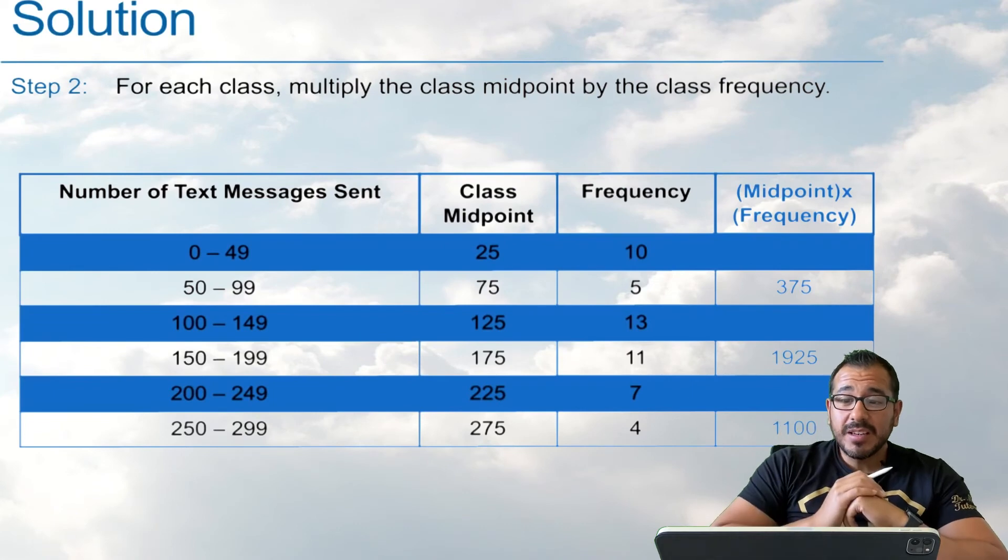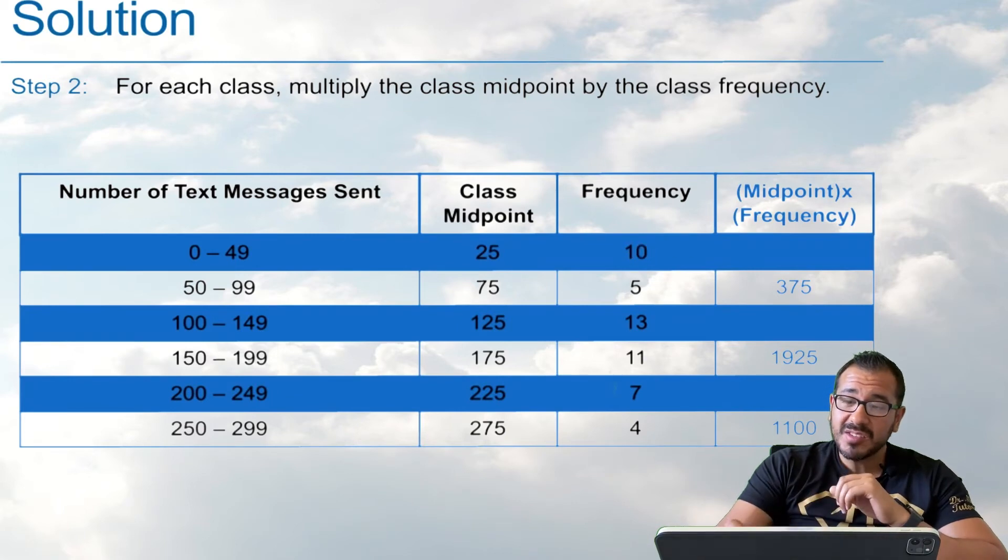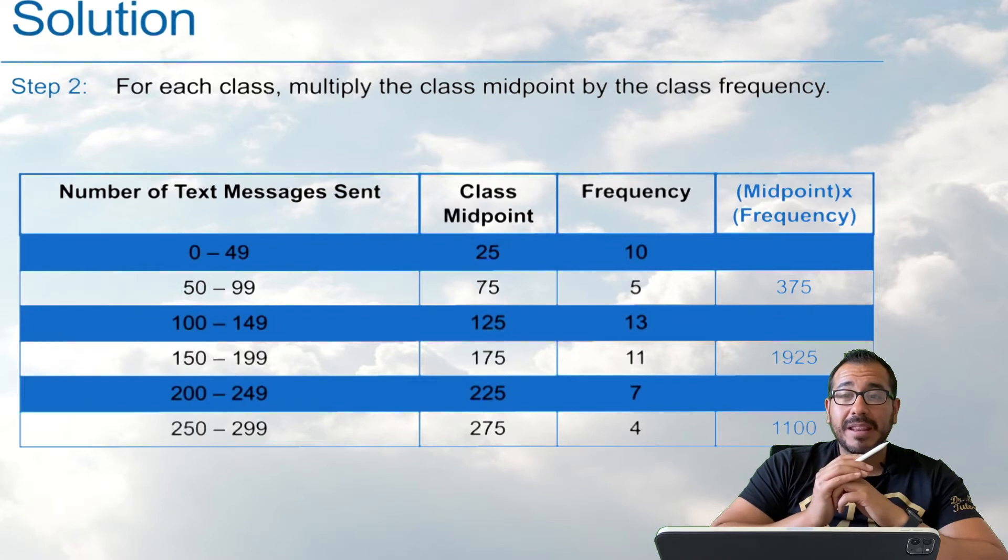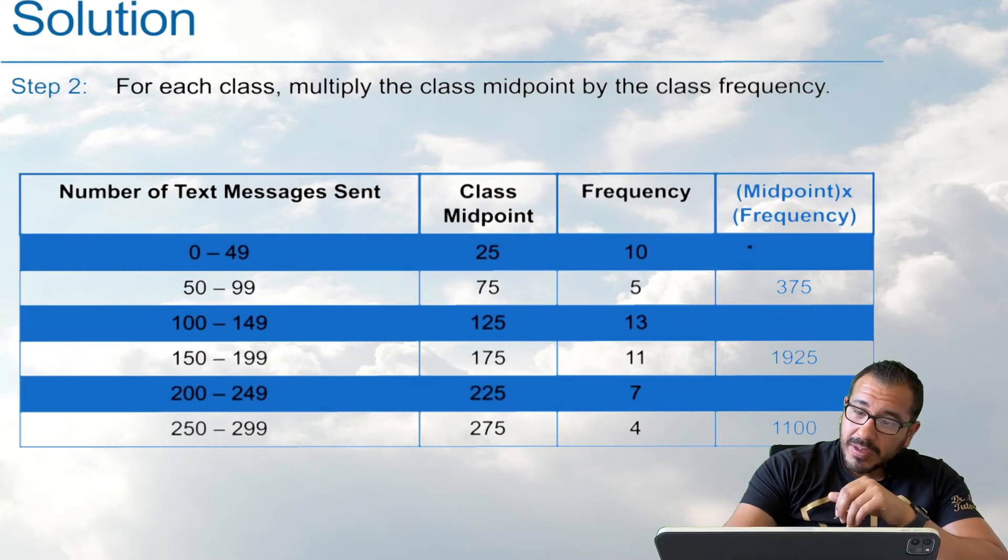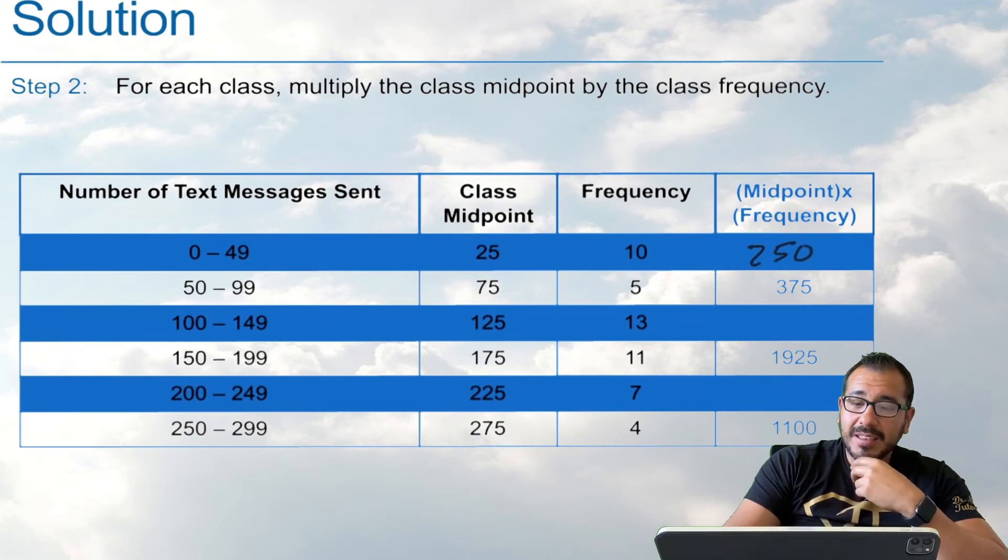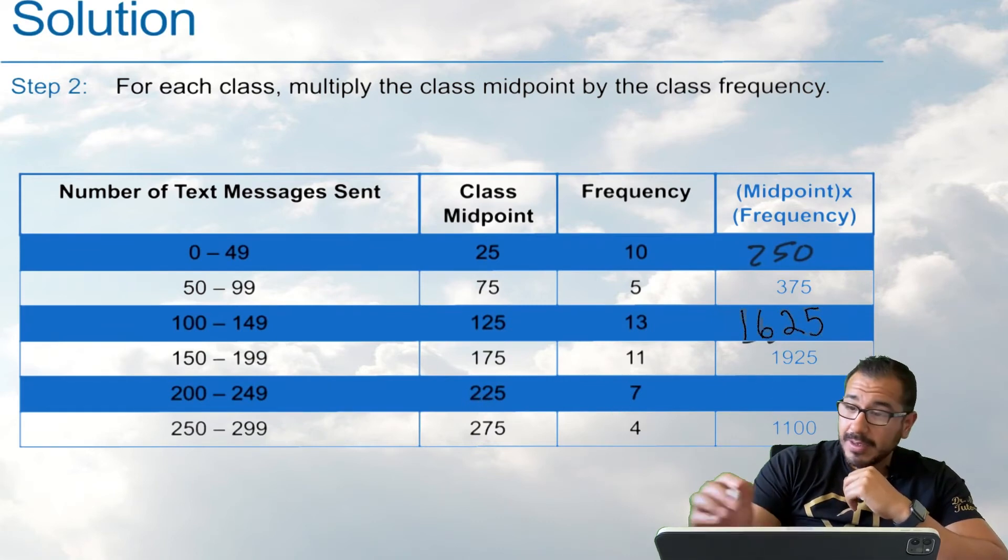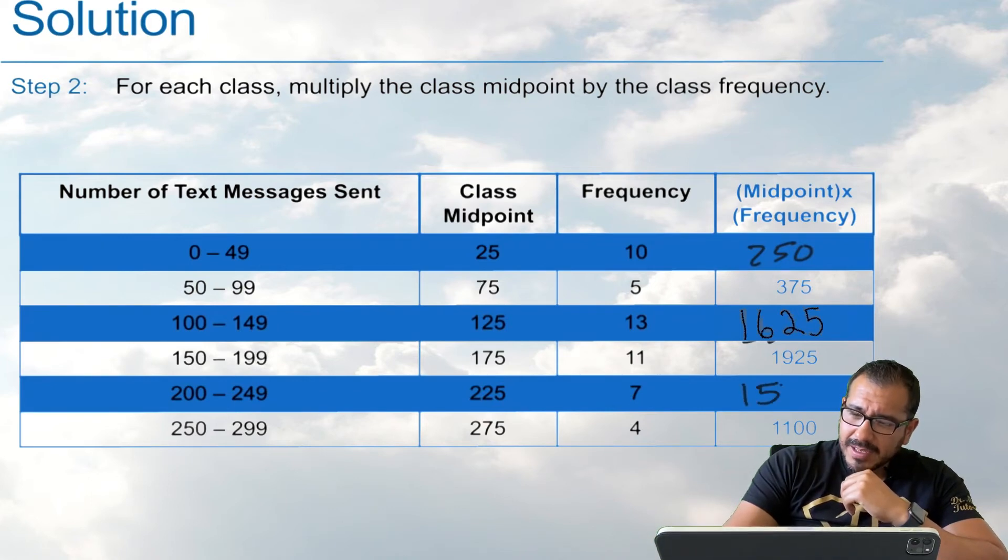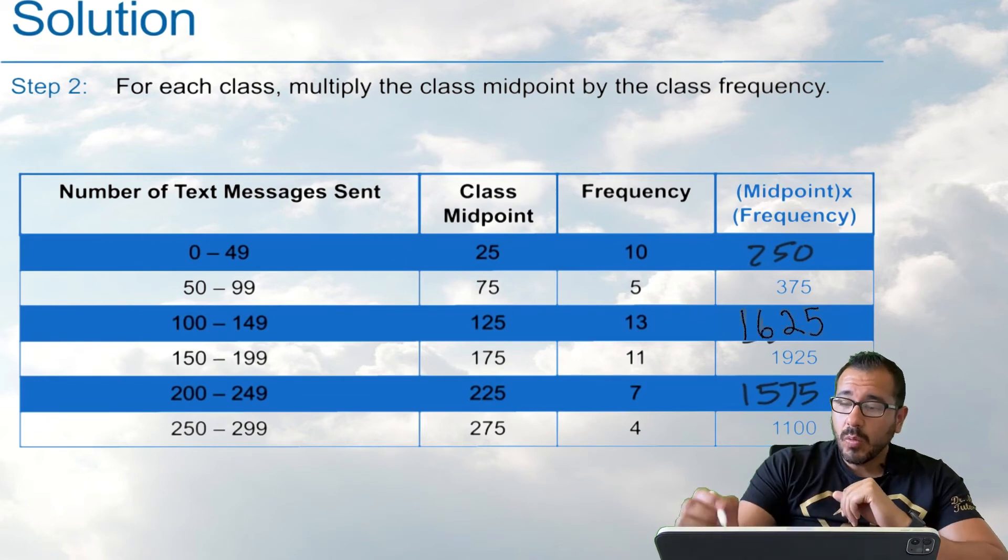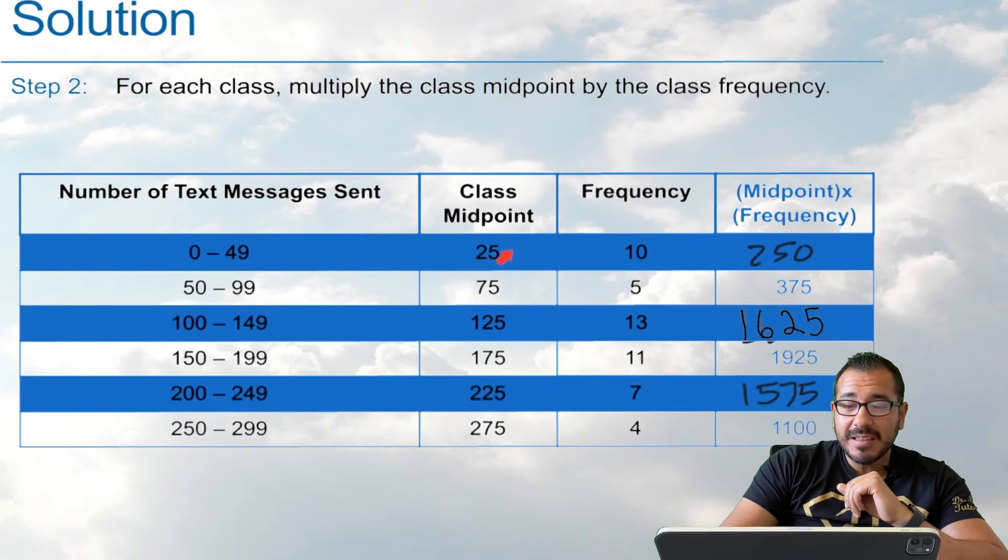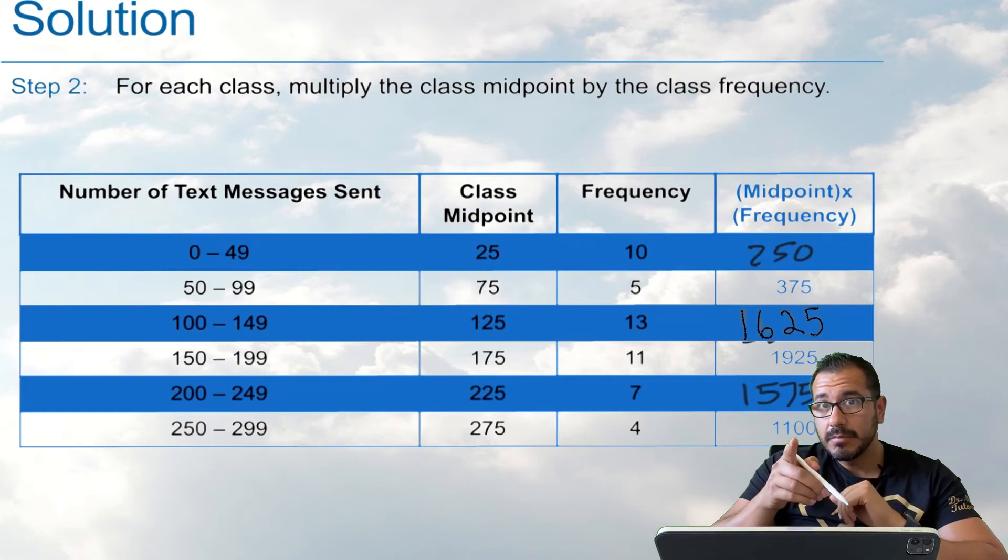All right. So the next thing we're going to do, according to our notes, is you're going to take each one of these class midpoints and you're going to multiply it times the frequency. So you take each midpoint and you multiply it by the frequency. So 25 times 10, we get 250 here. And then we're going to take the 125 times the 13. And then our next one that's missing right here is 225 times 7. So let's do that. And we're going to get 1575. So, again, what did we do? Just to recap, we multiplied every single one of these class midpoints times its frequency. And that's how we got this out right here.